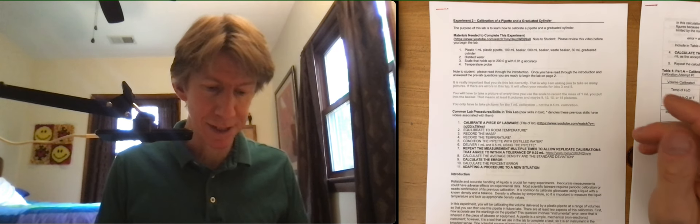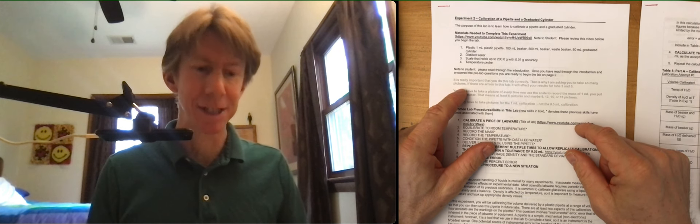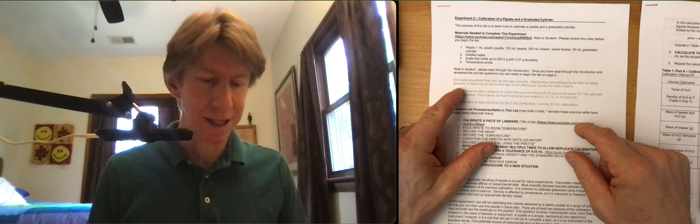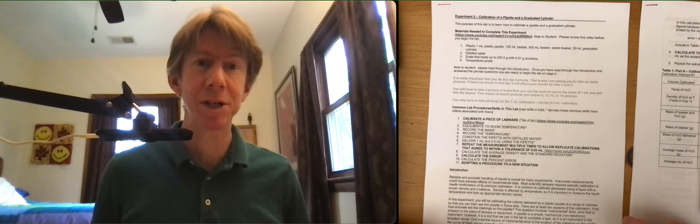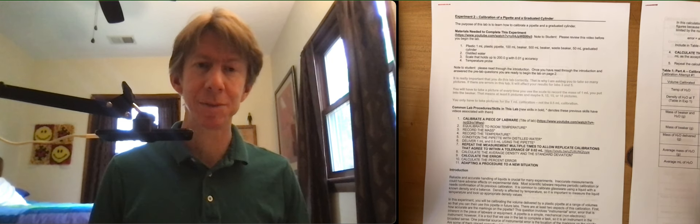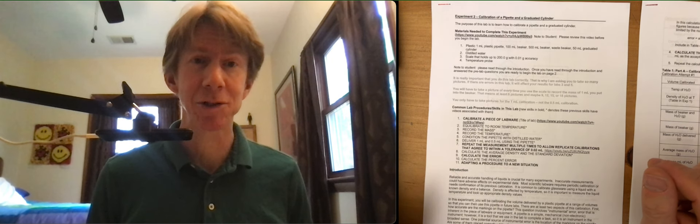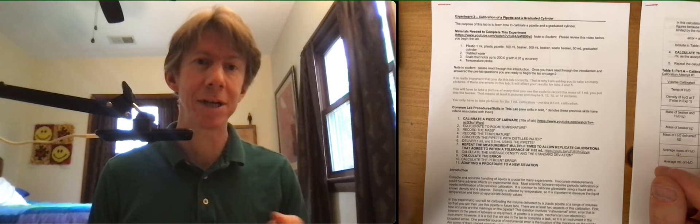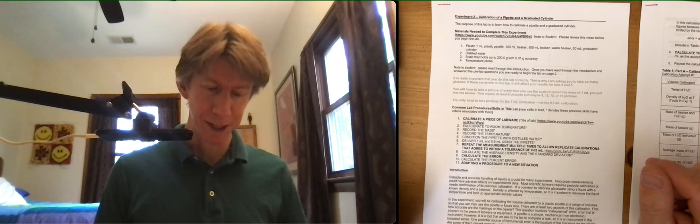On the handout it actually says this in green but here it shows up as gray. It is really important that you do this lab correctly, that is why I'm asking you to take so many pictures. If there are errors in this lab it will affect your results for experiments three and five. So please be careful about this lab. I know you're gonna be careful anyway but an extra layer of caution, or an extra layer of making sure to do it right and better yet to do it until you get it right. That's what we need.